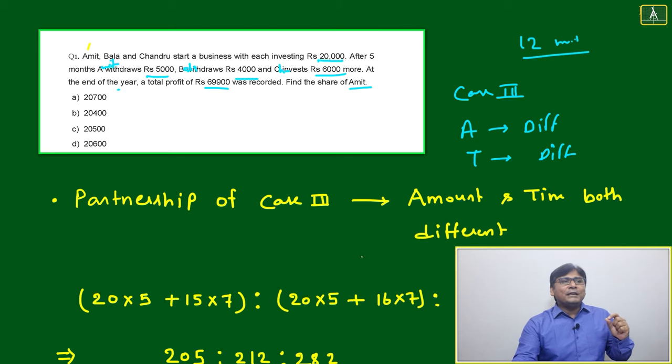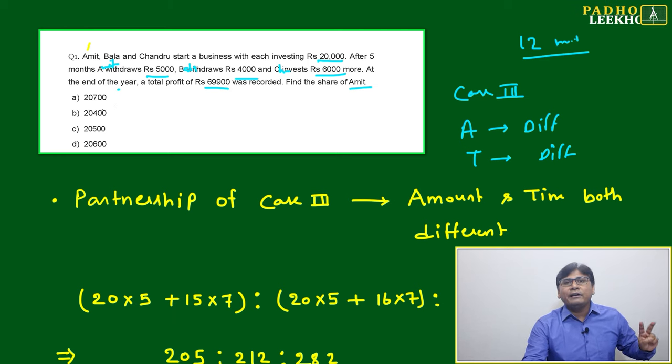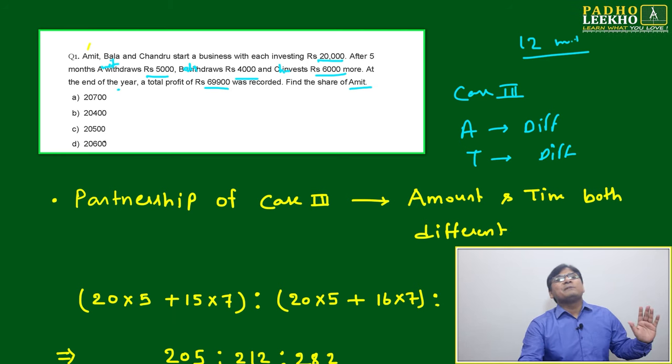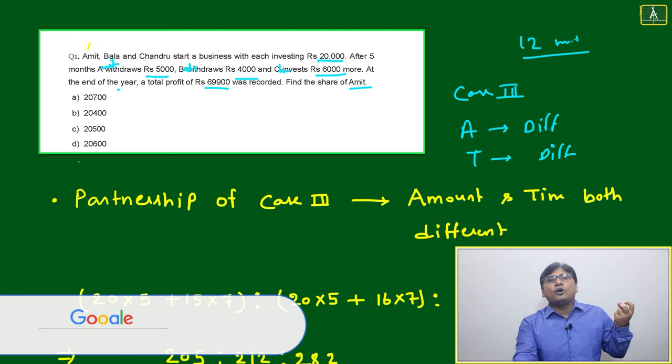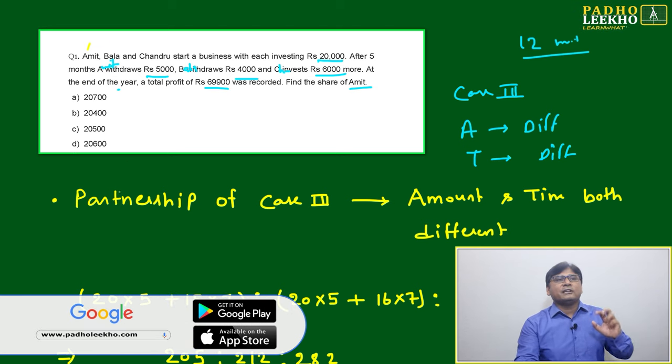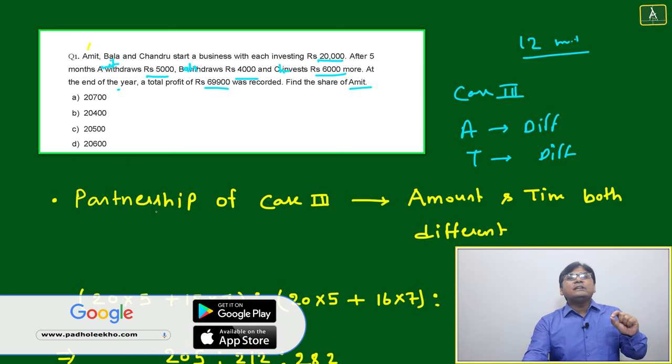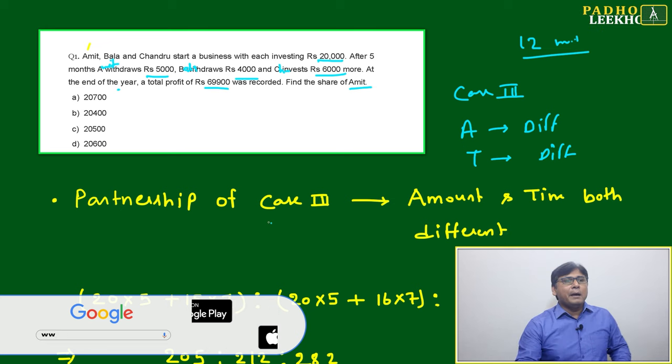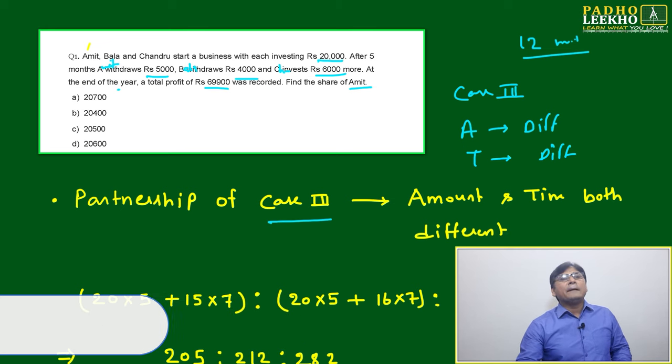Then how will we take the ratio of profit? Just multiply. How to multiply? Just take into account month-wise, because the total is given as only 1 year, but in between after some months, some activity is happening. Either amount will be withdrawn or deposited further. Then just take account in the form of number of months. Partnership of Case 3: amount and time both are different.